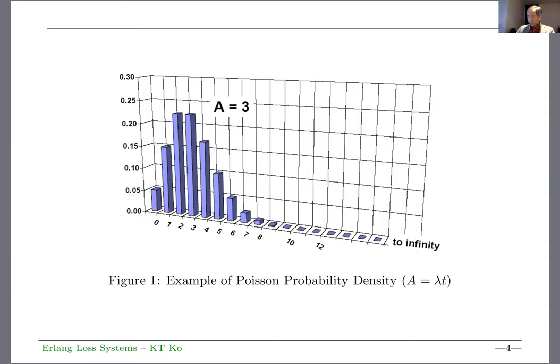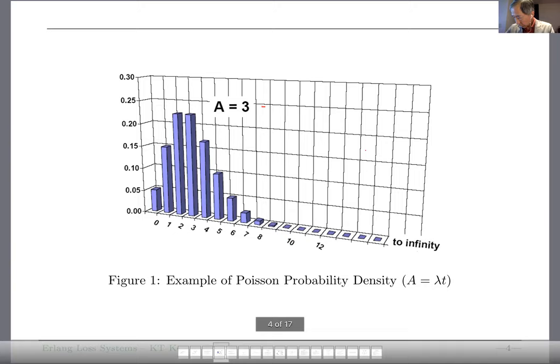If you look at this distribution where lambda t equals three, the probability is a discrete distribution. You can have zero calls with system empty, one call, two calls, three calls. Zero calls is about five percent, one call about 15 percent, two or three calls about 22 percent, and it falls off very quickly to almost zero. This is the shape of one Poisson distribution.